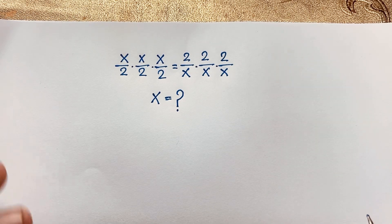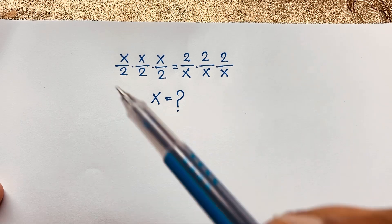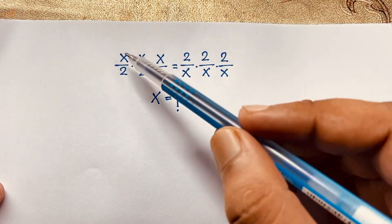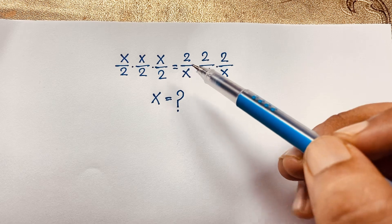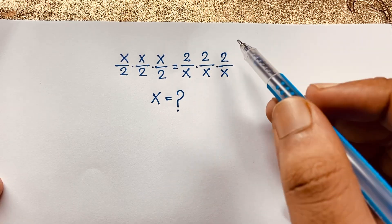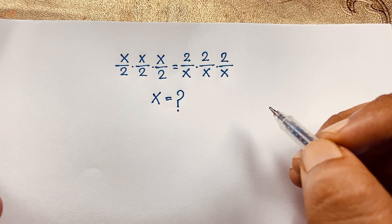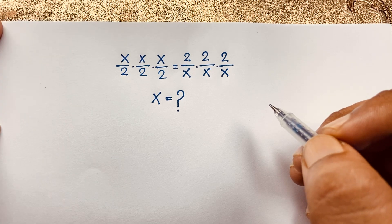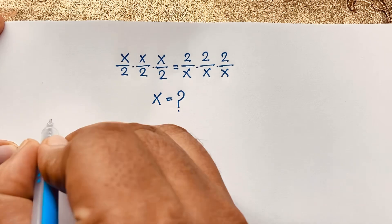Hello everyone, welcome to Rachel's Classroom. Today we have solved a nice German Math Olympiad question. This question is: (x/2) × (x/2) × (x/2) = (2/x) × (2/x) × (2/x). What is x? How do we solve this interesting math problem?